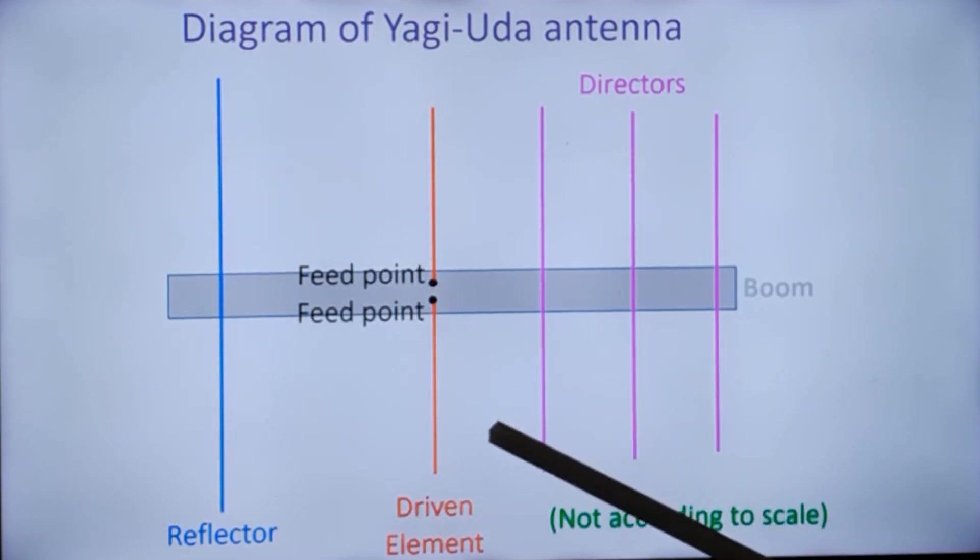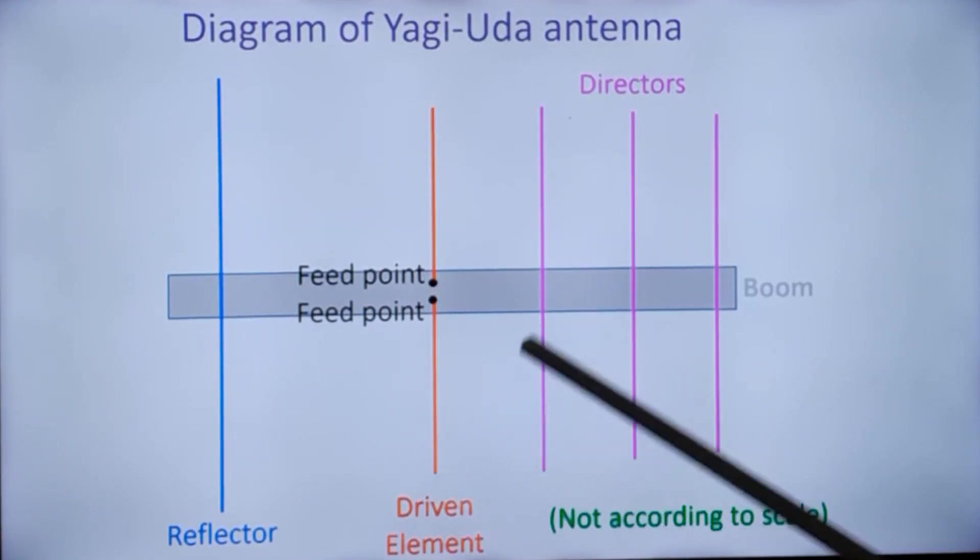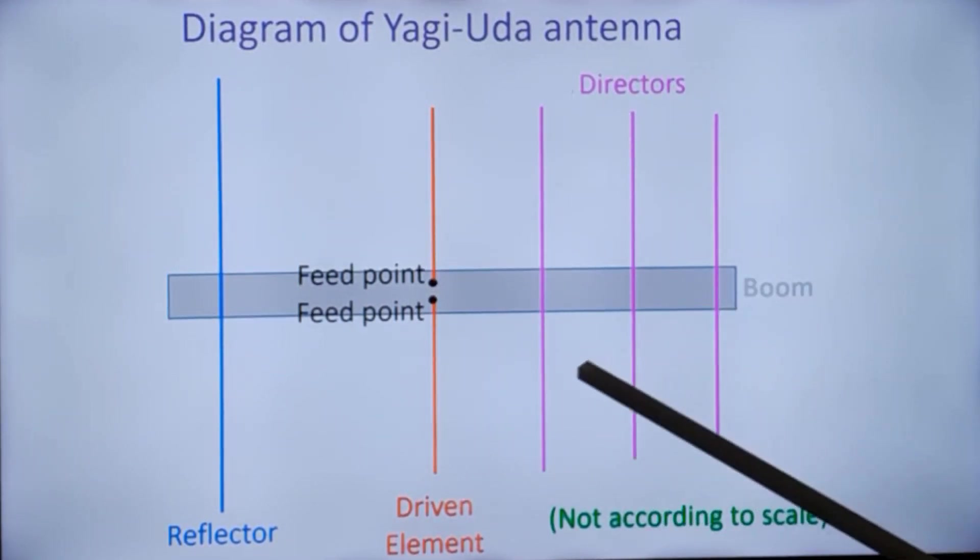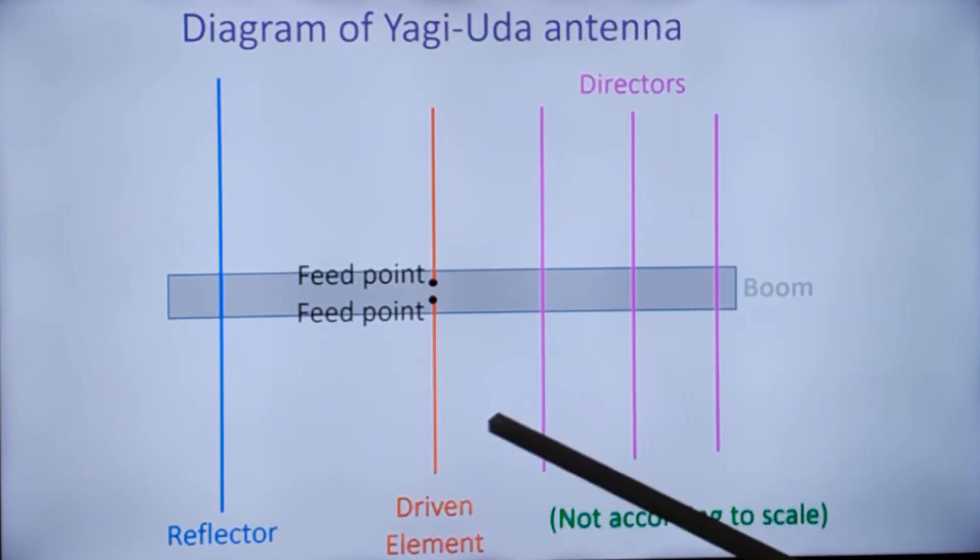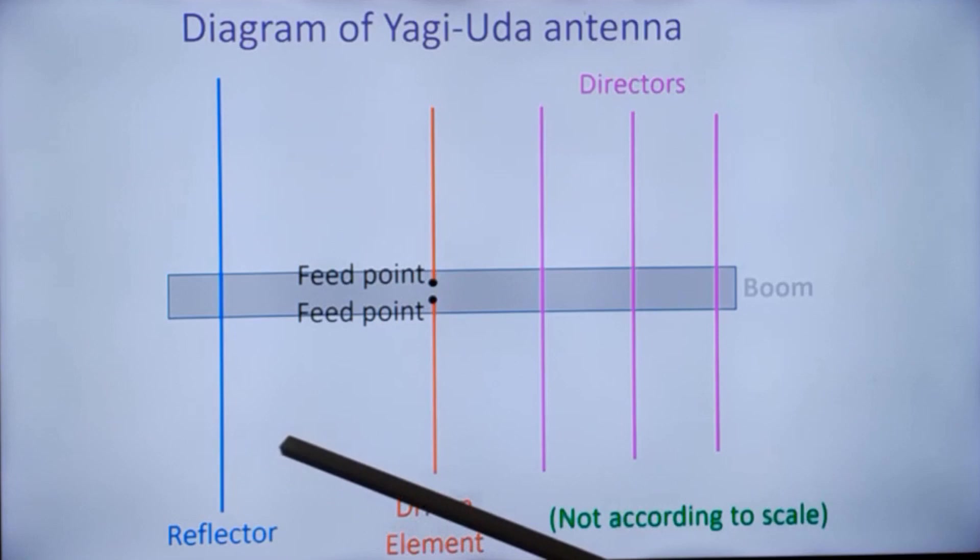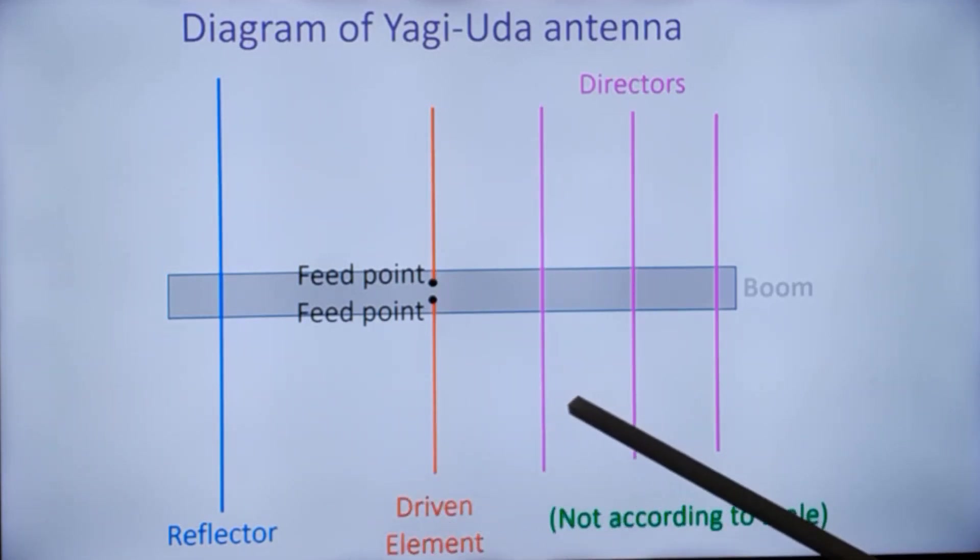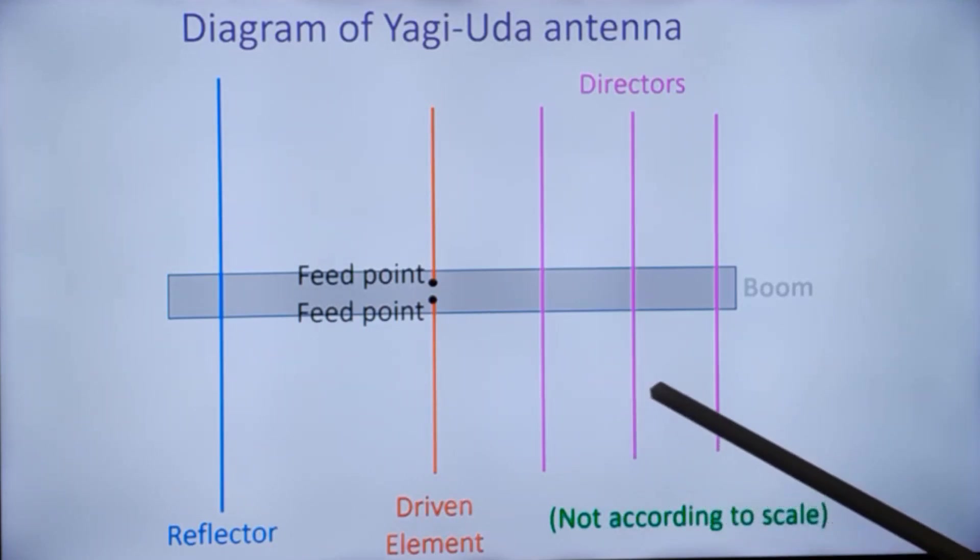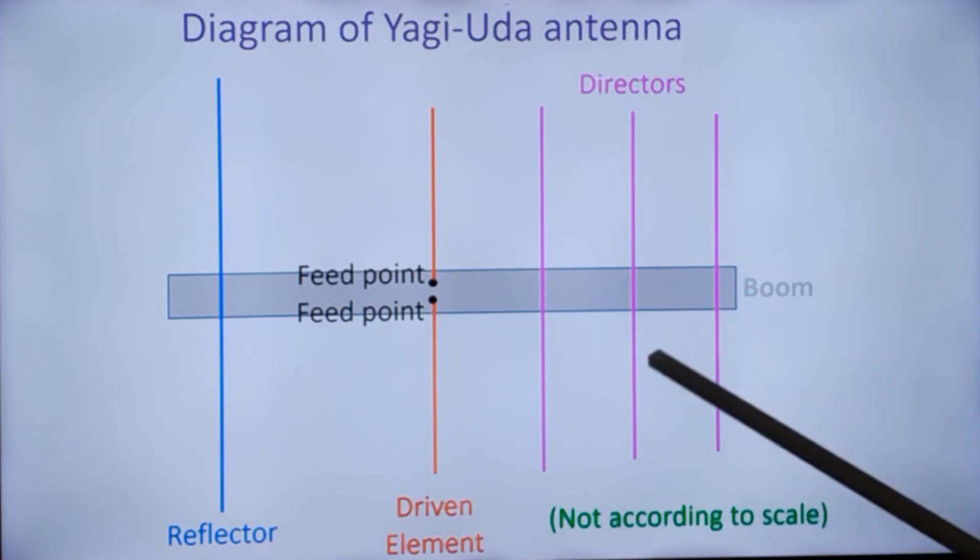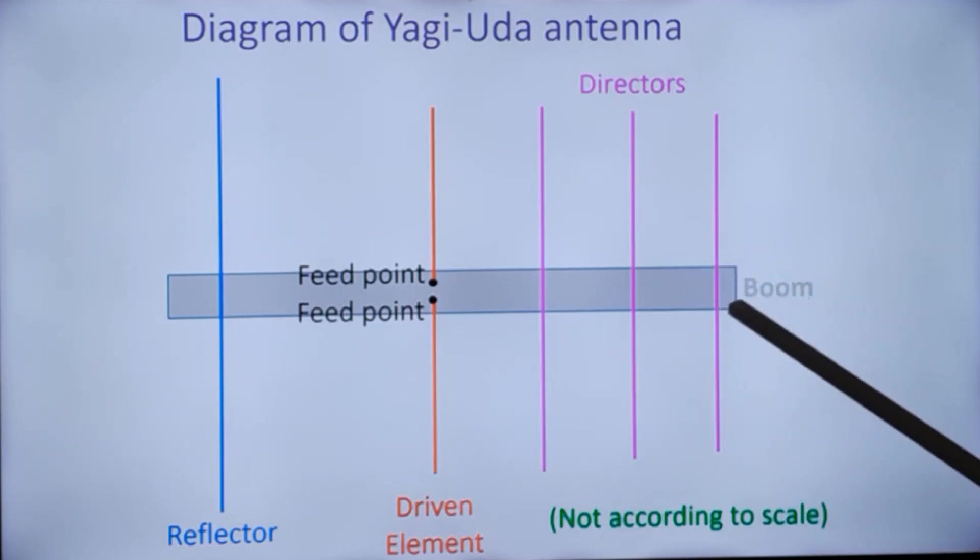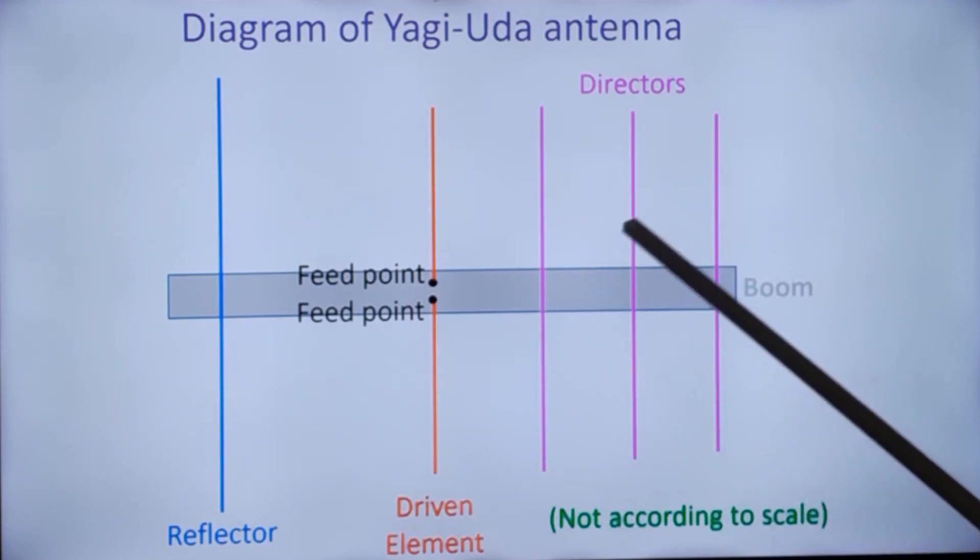An antenna can have up to a gain of about 20 dB depending on the design and the number of elements. Adding a reflector will give almost a 5% increase and one director might give 1% increase. As the number of directors increase, it is not a linear increase. It increases in a diminishing way, and at a point it will not be worthwhile increasing the number of directors.